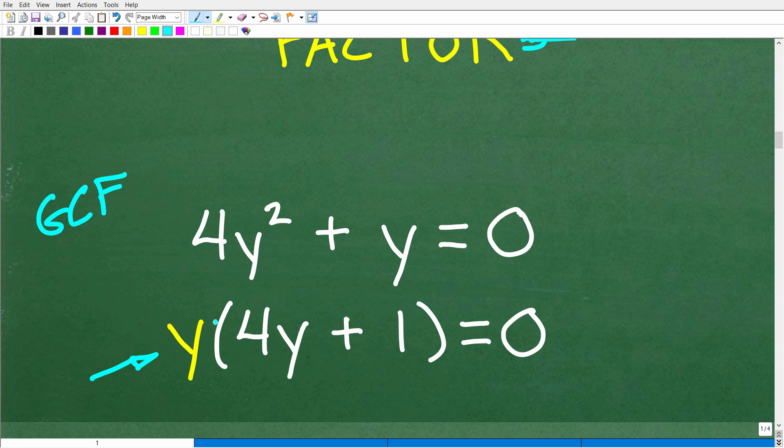So we just factored out the greatest common factor here. Now, we can always check our factoring by multiplying back in. So y times 4y is 4y squared. And y times 1 is y. All right. So we have factored this polynomial. And again, this thing is equal to 0.